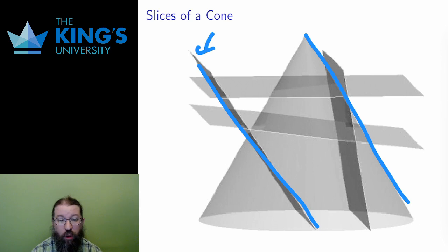And by sliding over, I can see that the slope of the slice is exactly the same as the slope of the edge of the cone.